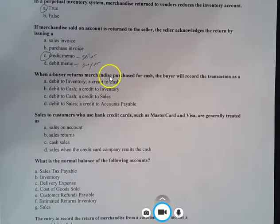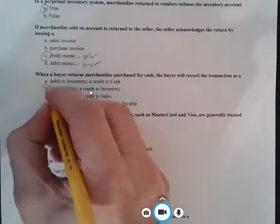All right, let's see what else we have here. It says, when a buyer returns merchandise purchased for cash, it's a little bit different situation, the buyer will record the transaction as a debit to inventory, credit to cash. Well, no, because inventory is going down because they're returning the merchandise. Merchandise is inventory. So we're already wrong there. A debit to cash and a credit to inventory. Well, they paid cash, so they should be getting cash back. So this looks right. We're going to increase cash, but inventory is going down. And so we're going to do that with a credit. So choice B is going to be our answer.